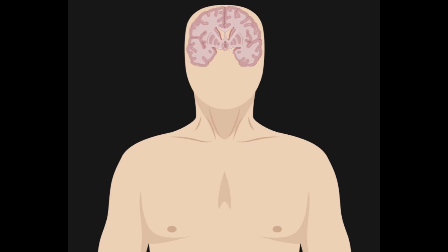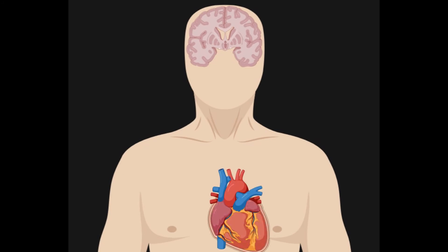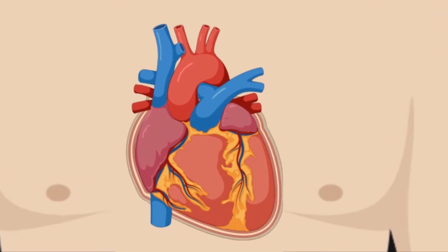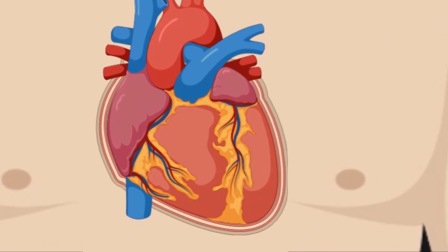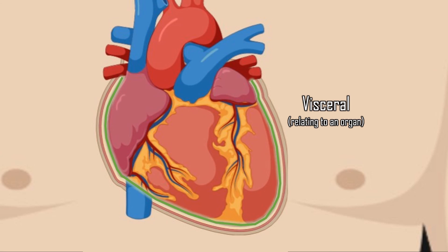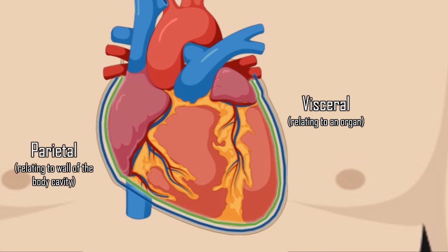The last two terms I'm going to cover are usually used in relation to the coverings of an organ. The organs in the thoracic cavity and the abdominal cavity have two layers. The layer that's touching the organ would be the visceral layer, and the layer that is further away from the organ and closer to the wall of the body cavity would be the parietal layer.